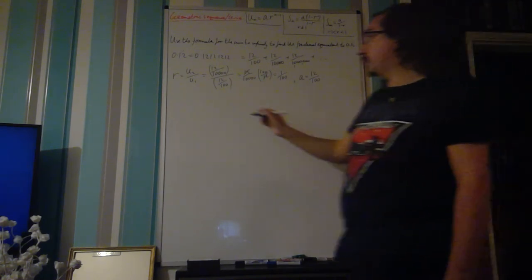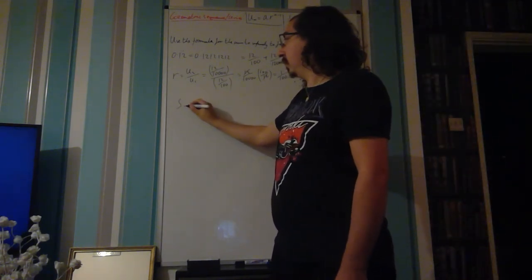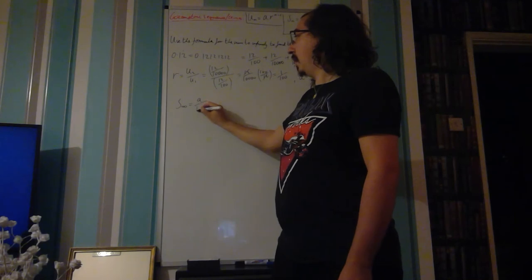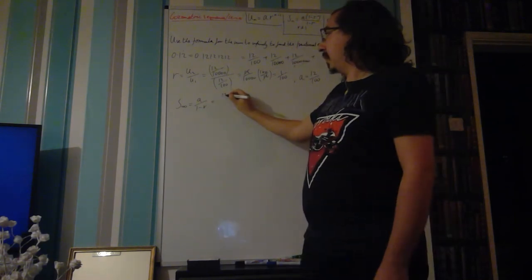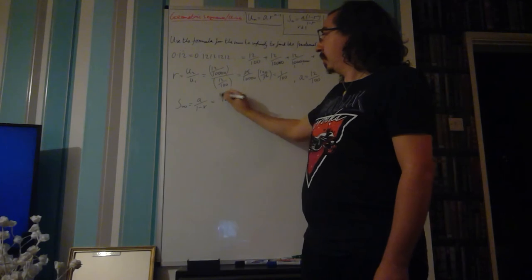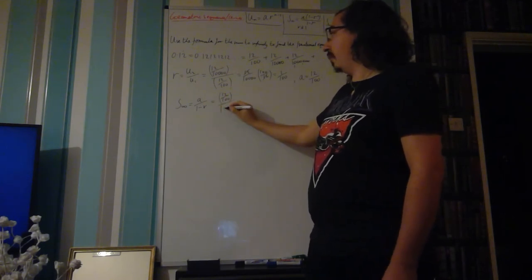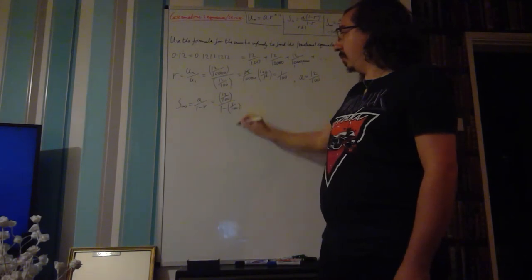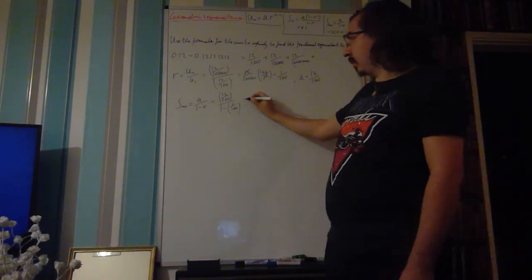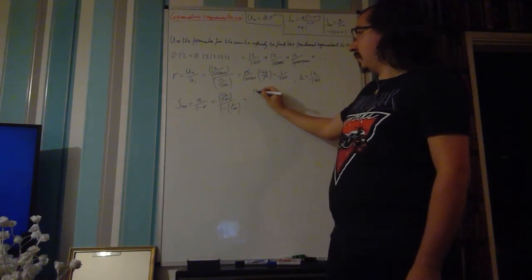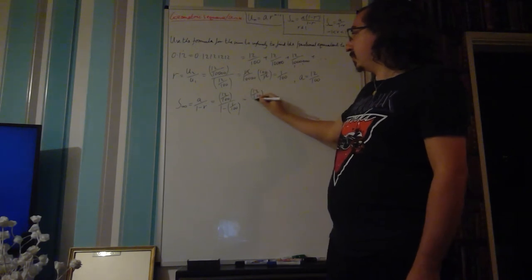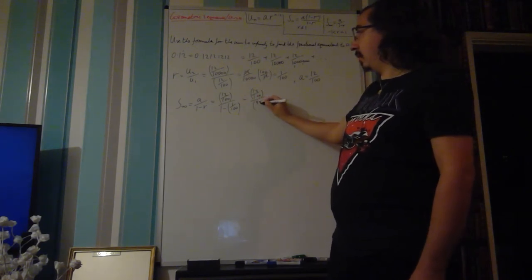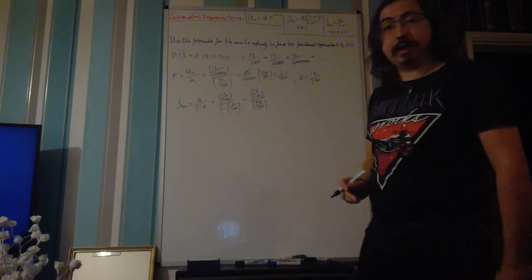So we can use the sum to infinity formula. We've got a over 1 minus r. We have 12 divided by 100 over 1 minus r, which is 1 over 100. So we have 12 over 100 divided by 99 over 100.